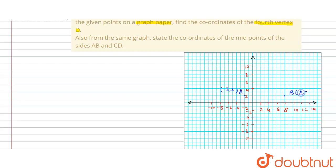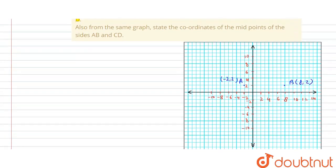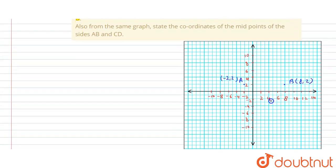Point C is (4, -4), so X is four and Y is minus four. This is point C at coordinates (4, -4).